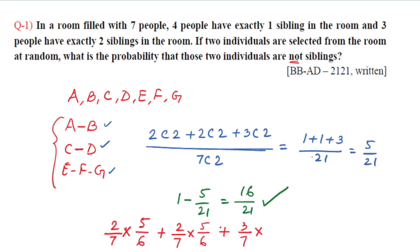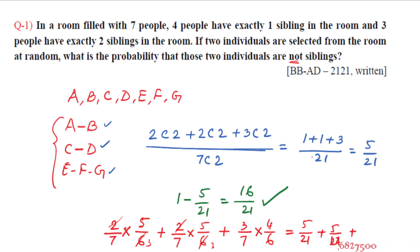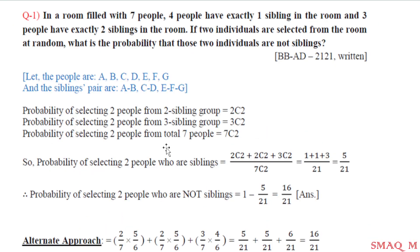Now let me verify: A, B, C, D — the sibling pairs. Simplifying: 4 by 6 simplifies, giving 5 by 21. Then 5 plus 5 is 10, plus 6 is 16 by 21. So the answer is 16 by 21. That is the direct answer for question number one. Now a solution in language form — the answer is confirmed.